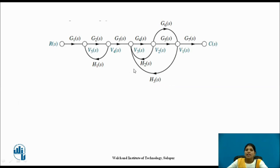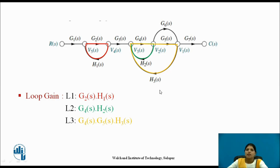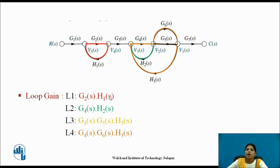Now identifying the loops and their loop gains: the first loop has a loop gain of g2(s)·h1(s). Then l2 has a loop gain of g4(s)·h2(s). The third loop has a loop gain of l3 = g4(s)·g6(s)·h3(s). In this way you calculate the loop gains for all the loops in the signal flow graph.